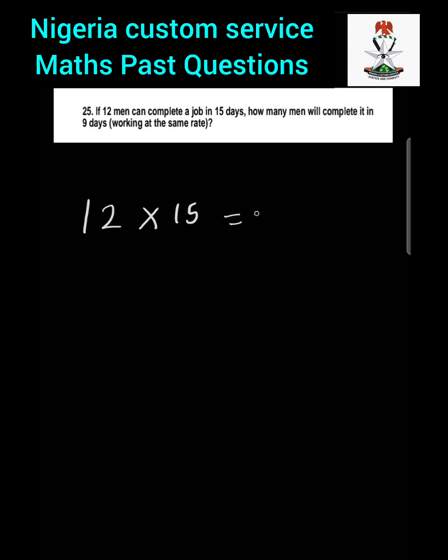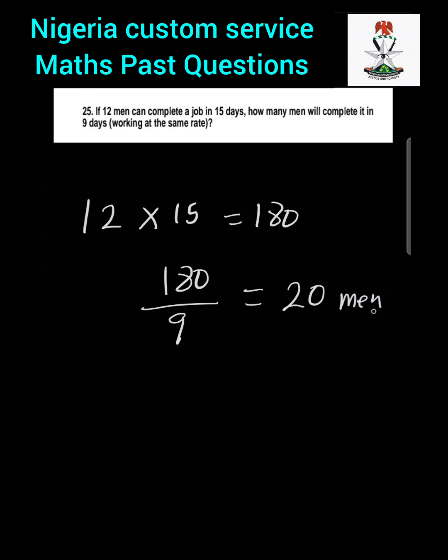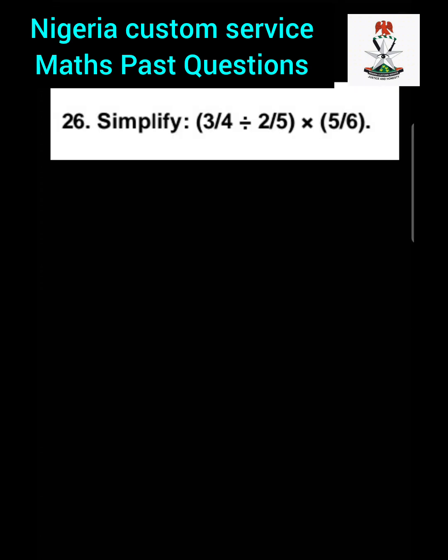Question 25: If 12 men can complete a job in 15 days, how many men will complete it in 9 days working at the same rate? From the first statement, 12 men multiplied by 15 days gives us 180 man-days. To find how many men are needed to complete it in 9 days, we divide 180 by 9, which gives us 20 men.